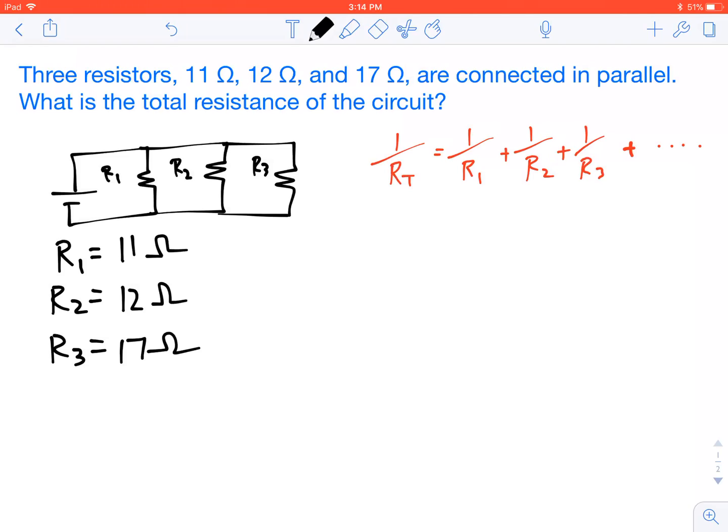Here we have three resistors, 11 Ω, 12 Ω, and 17 Ω in parallel, and we want to know, what is the total resistance of the circuit?